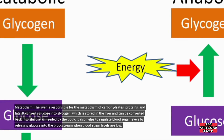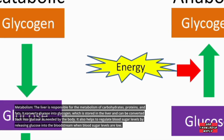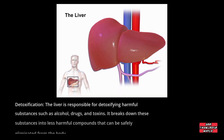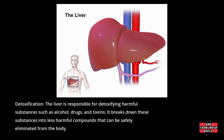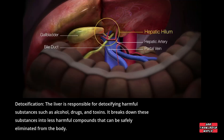The liver also helps to regulate blood sugar levels by releasing glucose into the bloodstream when blood sugar levels are low. Detoxification: the liver is responsible for detoxifying harmful substances such as alcohol, drugs, and toxins, breaking them down into less harmful compounds that can be safely eliminated from the body.